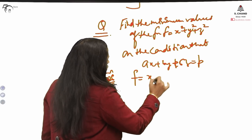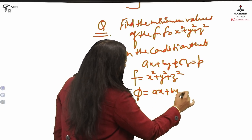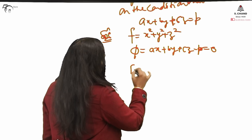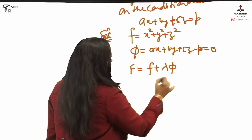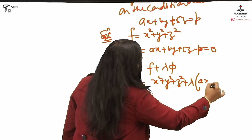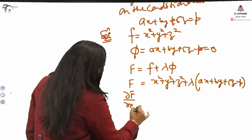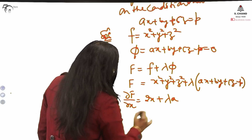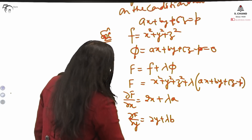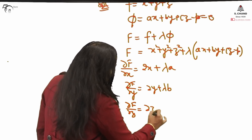My f is x² + y² + z², and the condition is assumed as phi: φ = Ax + By + Cz − P = 0. Make a new function: F = f + λφ. So F becomes x² + y² + z² + λ(Ax + By + Cz − P). Now take the partial derivatives. The partial derivative with respect to x gives 2x + λA; with respect to y gives 2y + λB; and with respect to z gives 2z + λC.